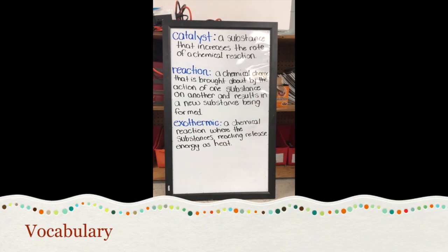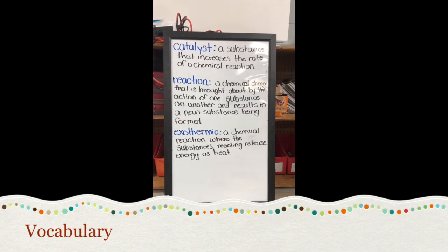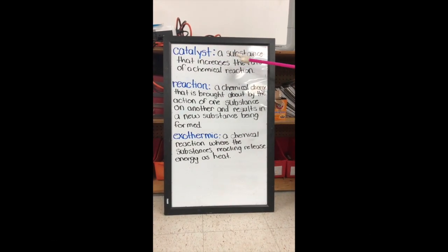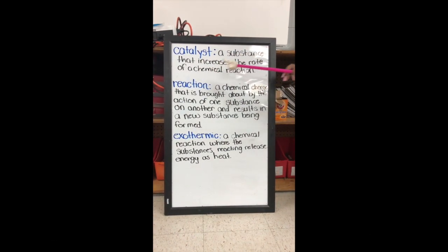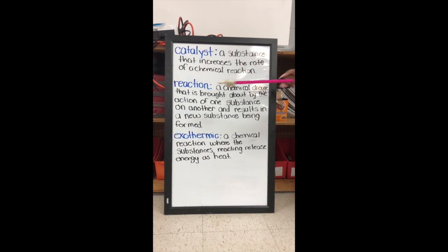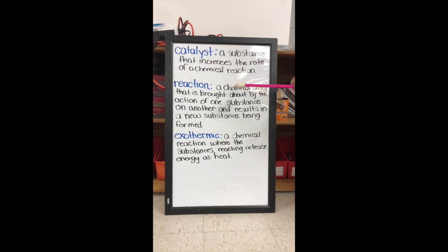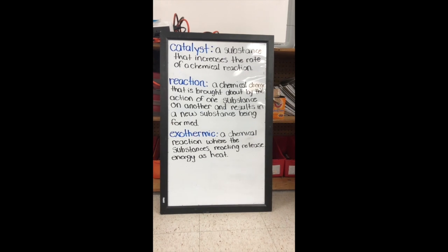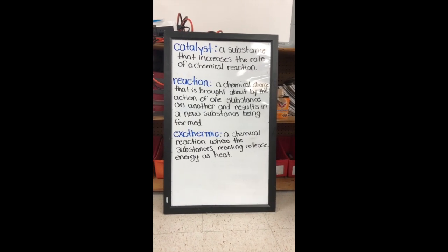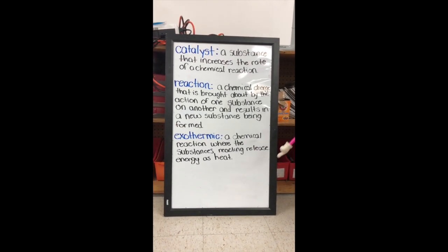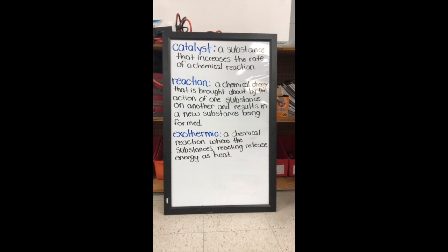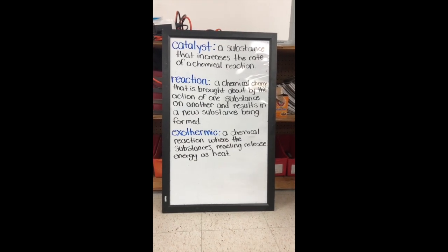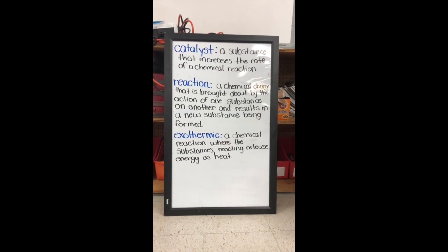Hey scientists, so we have three vocabulary words today. Catalyst: a substance that increases the rate of a chemical reaction. Our next vocabulary word is reaction: a chemical change that is brought about by the action of one substance on another and results in a new substance being formed. And finally, exothermic: a chemical reaction where the substances reacting release energy as heat.